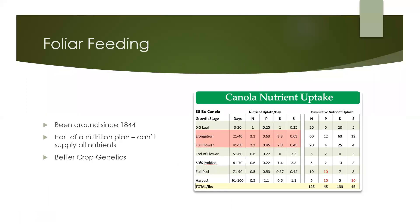How foliar feeding works. Foliar feeding is not a new concept — it's been around since 1844. You can't supply all of your nutritional needs through foliar feeding; it should be used as part of a complete nutrition plan for your field to go along with soil applied fertilizers. Since the introduction of Roundup Ready varieties, there's been a lot of improvement in genetics on many crops. There are now newer varieties that are taking up nutrients into later stages of crop development. The graph shows how canola is taking up nutrients in different stages of growth. Look at the phosphorus uptake in red — nearly half of what the plant is taking up is after it's 50% podded.